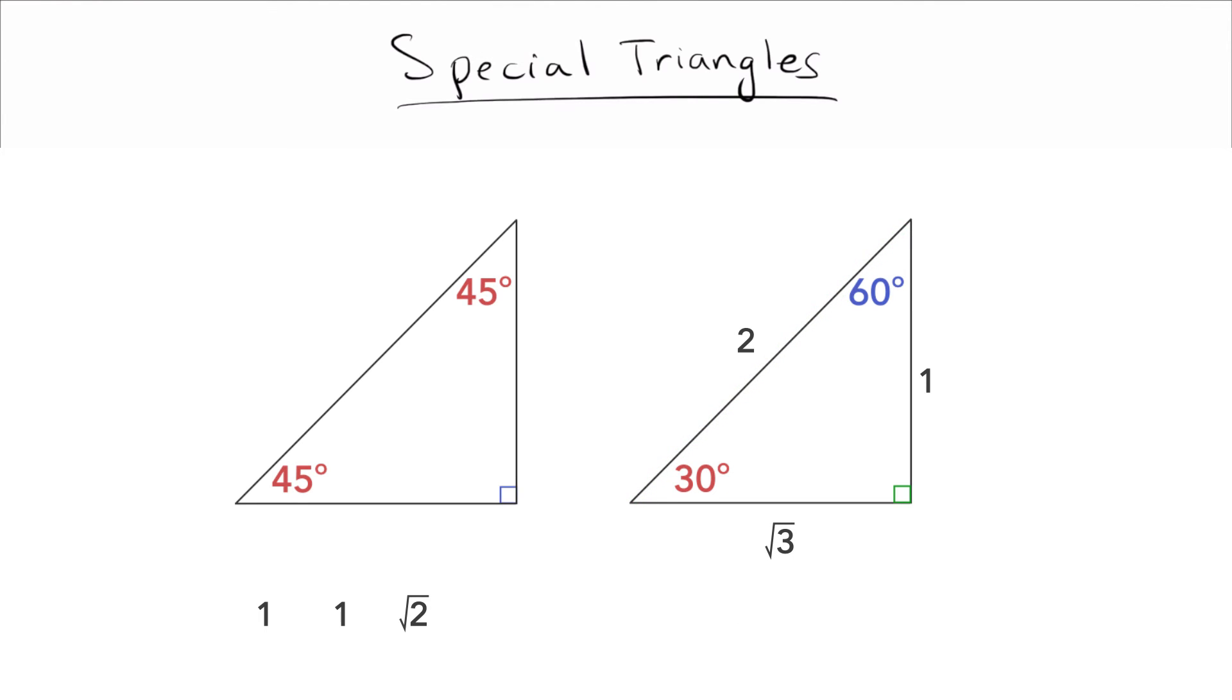So you can see, in fact, you don't even have to memorize which side goes with which angle. You just need to memorize what the sides are. So I just memorize for a 30-60-90 triangle. The sides are 1, 2, and square root of 3. And then I just figure out which one goes where.